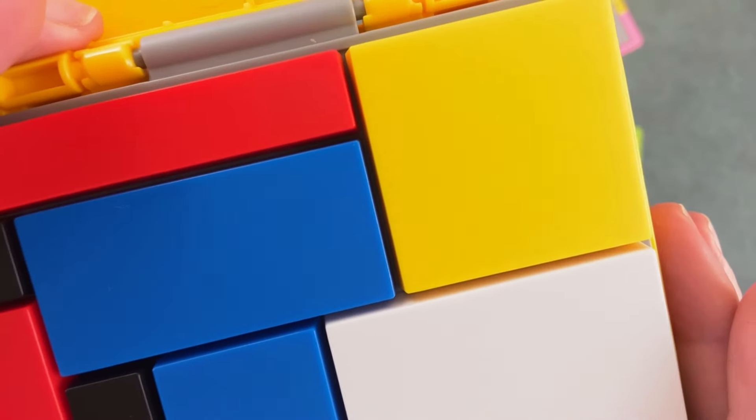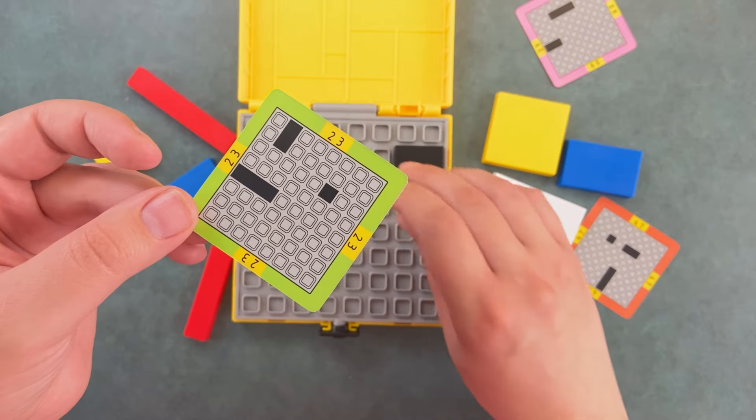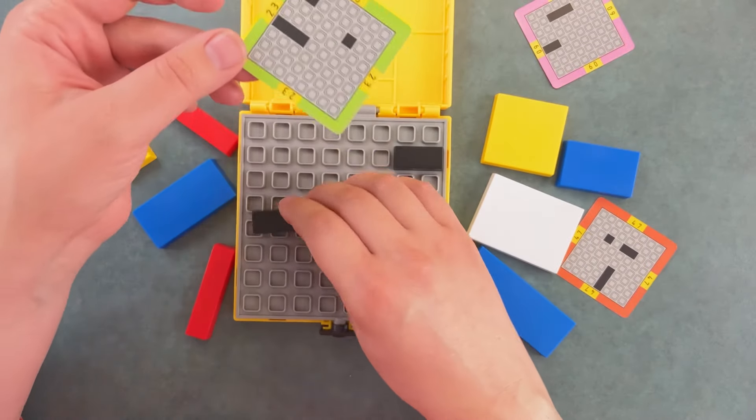To see more cool puzzle videos like this, click that subscribe button. The difficulty levels start off with pink being the easiest, then it goes to green, then to orange, and lastly purple being the most difficult.